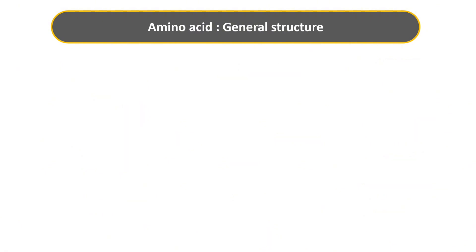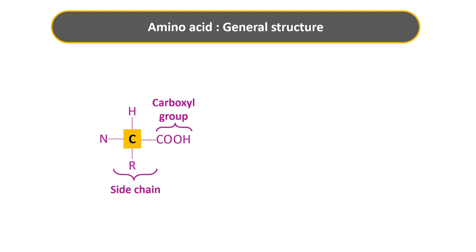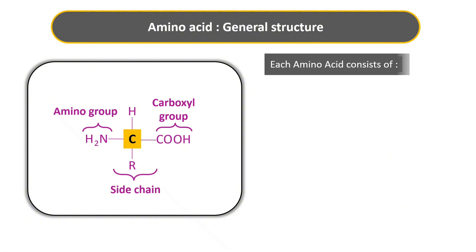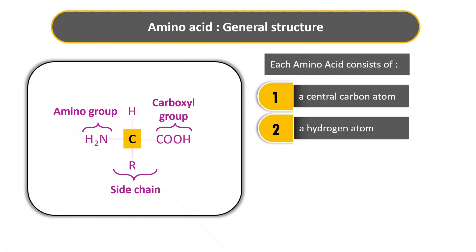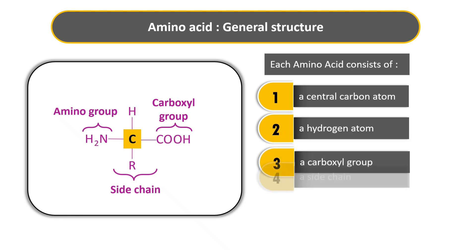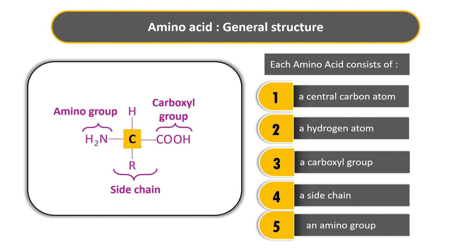Coming to the structure of an amino acid — we represent it as a central CH attached to four groups: C stands for the carboxyl group, R stands for the side chain, N stands for the amino group, and H is the hydrogen atom. As the name suggests, amino acid has both amino and acid groups as its functional groups. Each amino acid consists of a central carbon atom, a hydrogen atom, a carboxyl group, a side chain, and an amino group. The functional groups in amino acid are the carboxyl group and amino group.